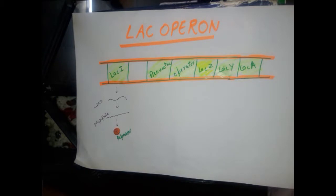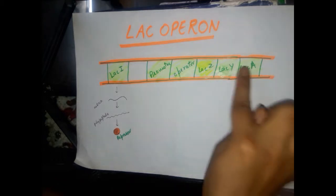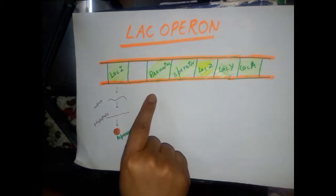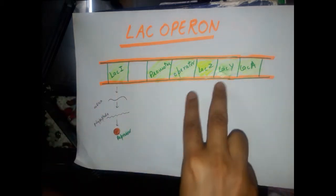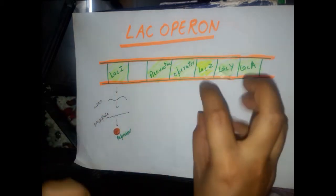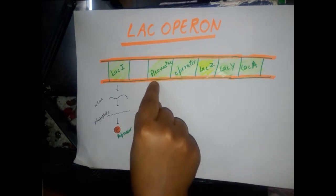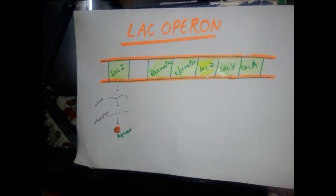In this video we are going to learn about the lac operon. Before moving on, we need to understand what exactly an operon is. An operon is a set of genes which are under the control of a single promoter. For example, here there are three genes — lacZ, lacY, and lacA — under the control of a single promoter. One general example we see is the lac operon present in E. coli.